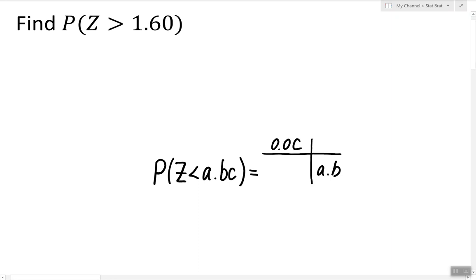We have to first use the probability rule that says the probability of z being greater than some number is equal to 1 minus the probability of z being less than that number.